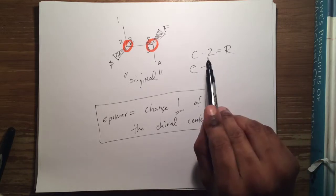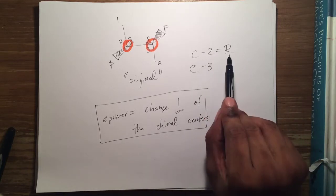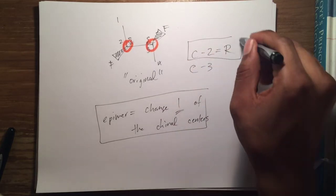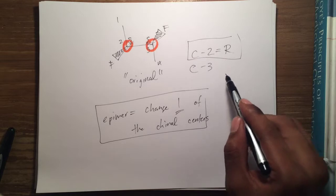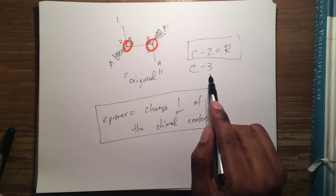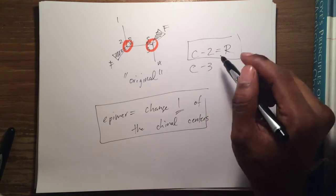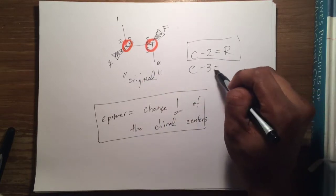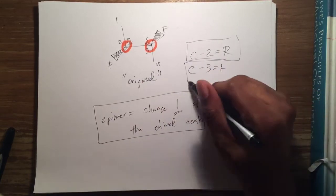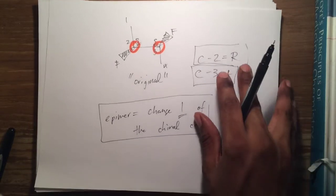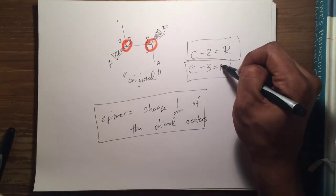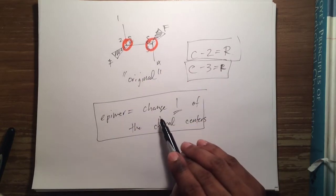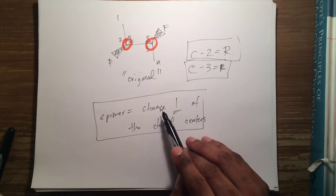At the C2 position, if you change C2 to R and leave three at S, that'll be a C2 epimer. And also, at the C3 position, if you take the S and you change it into an R, then it'll be a C3 epimer — because at the C3 position you took that configuration and you inverted it. When I say change, you have to invert the configuration.